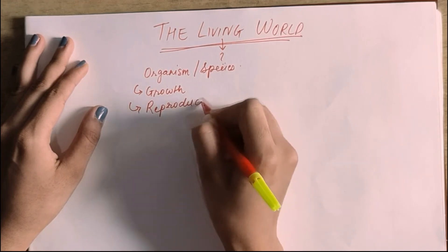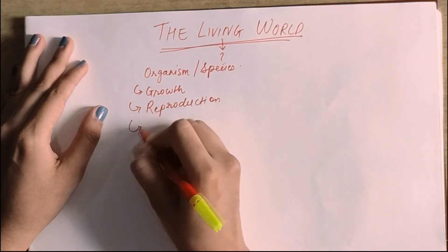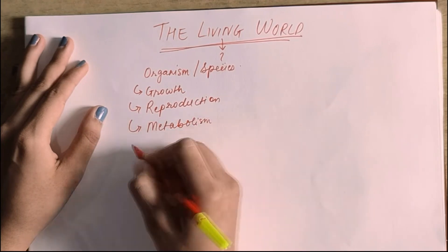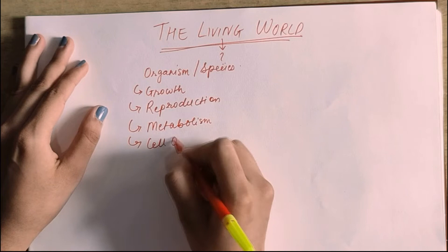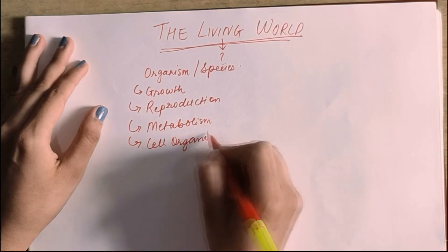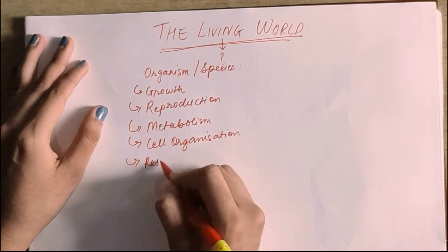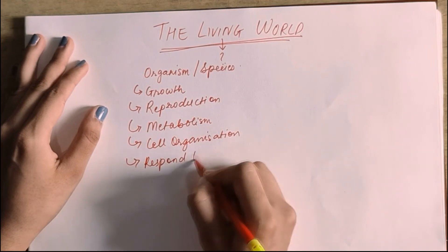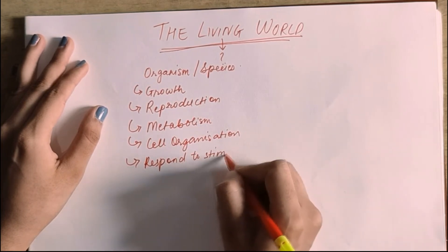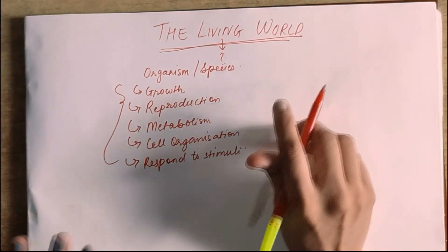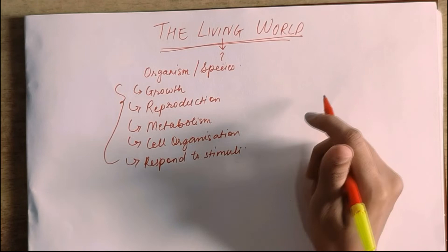metabolism, cell organization, and respond to any stimulus. These five properties can be considered alive to show any organism or species.